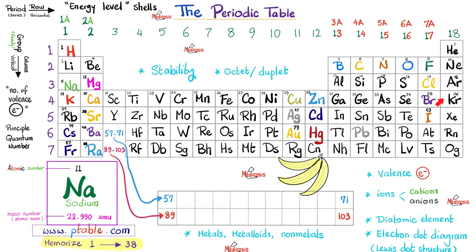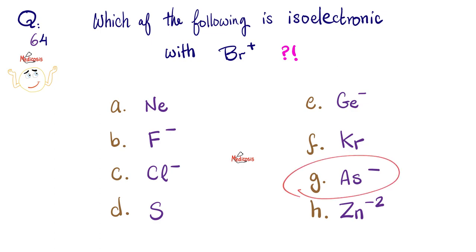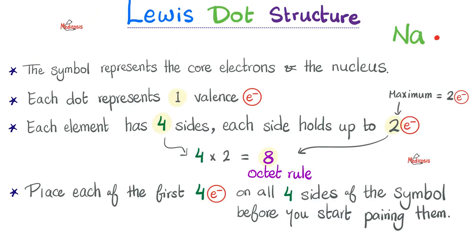Looking at the periodic table, bromine has lost an electron, so it now has 34 electrons — it's basically sitting at position 34. This is similar to As negative one, meaning arsenic has gained an electron and also has 34 electrons. So the correct answer is As⁻. None of the other options has 34 electrons, so none of them is isoelectronic with Br+1. And now on to today's topic: Lewis dot structure.